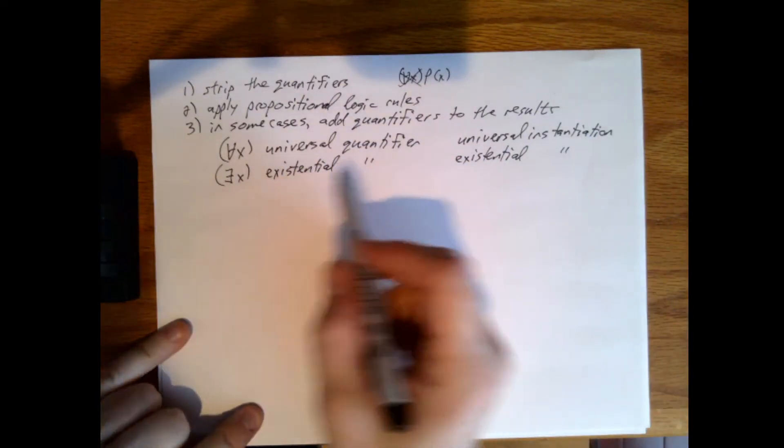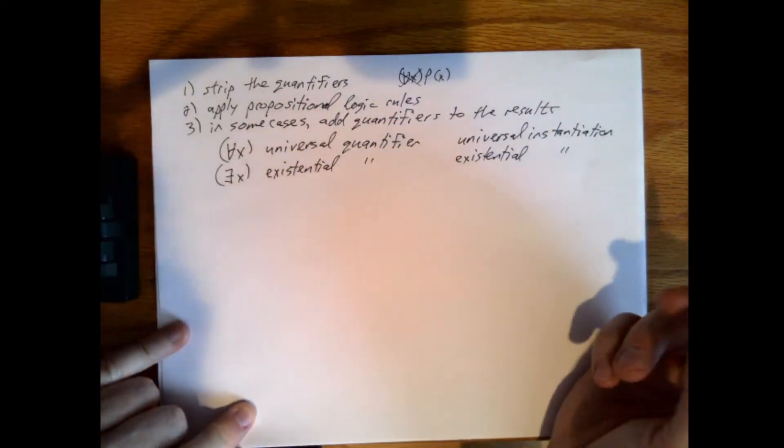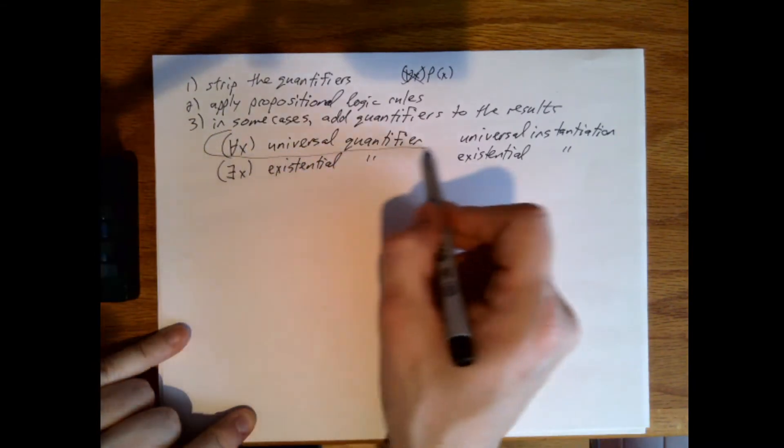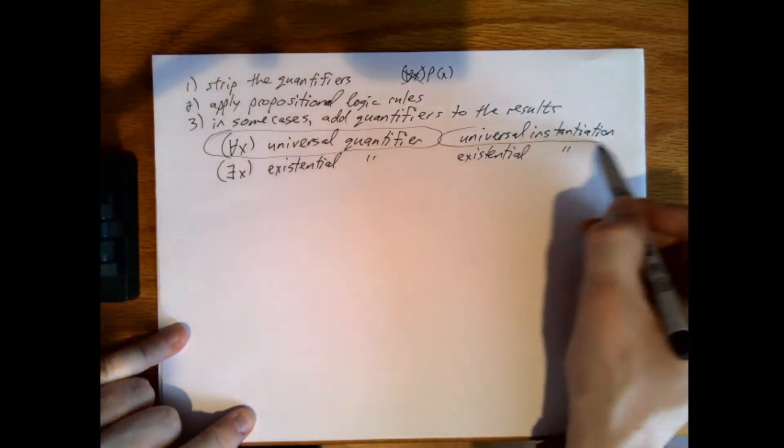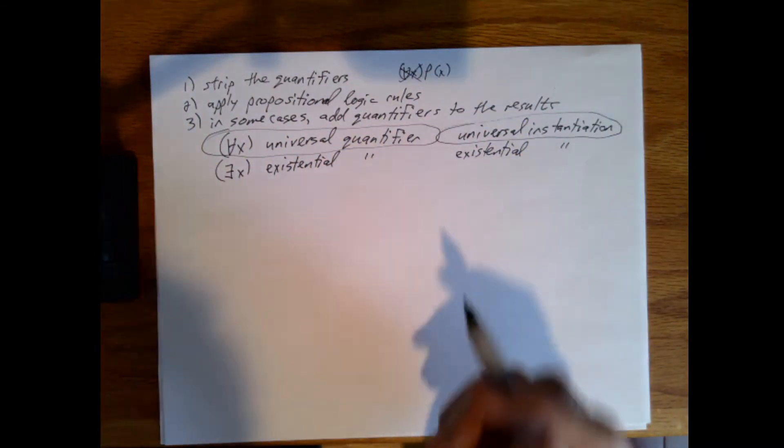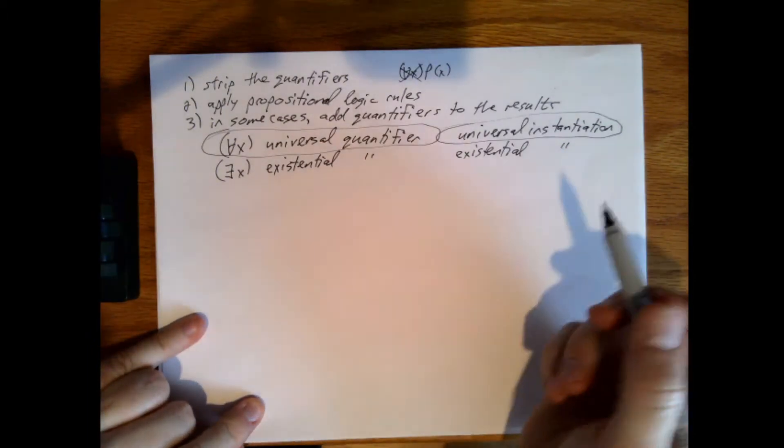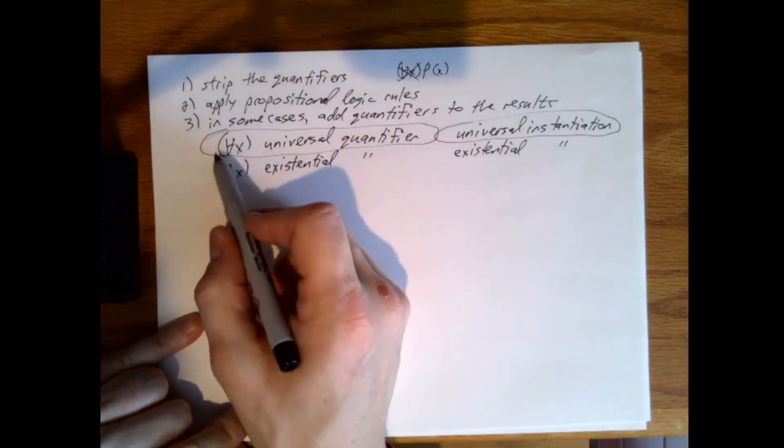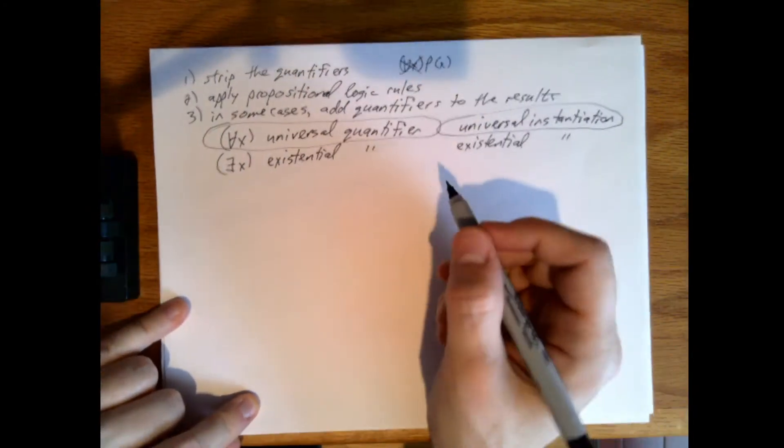We'll have two ways to put things back as needed. So in this video, we're going to look at this first one: universal instantiation. The idea, of course, is to eliminate this and then do things with it. Let's look at this problem.